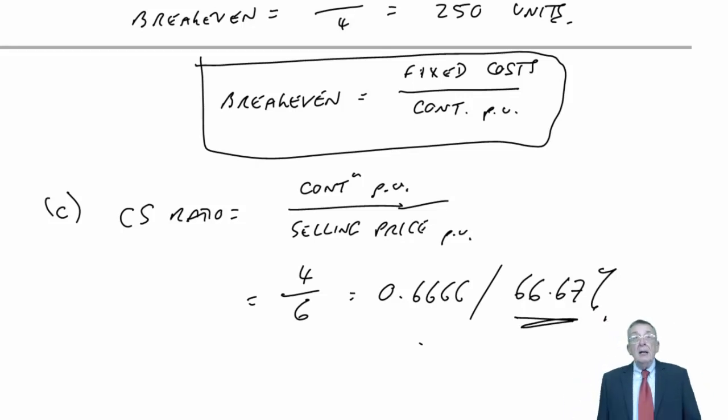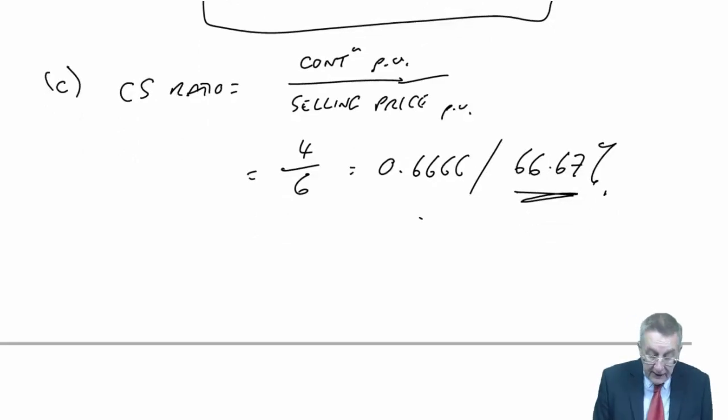What's the relevance of it? However many units I sell, for every unit, the contribution is $4 for every $6 selling price. Whether I sell one unit or a thousand units, the total contribution will always be 66.67% of the total selling price. Revenue, variable cost, contribution all go up and down together.